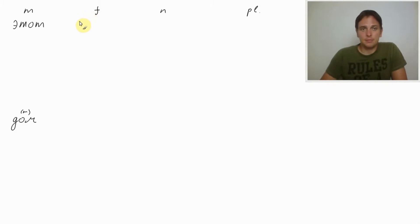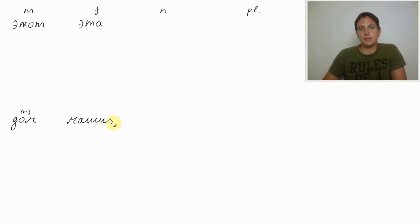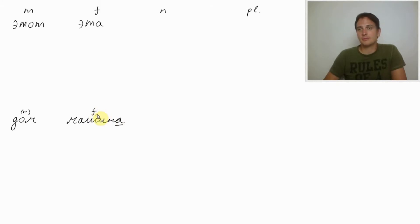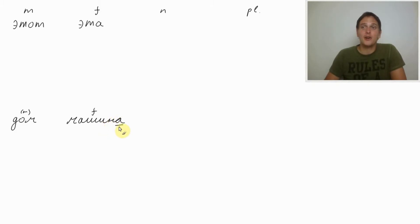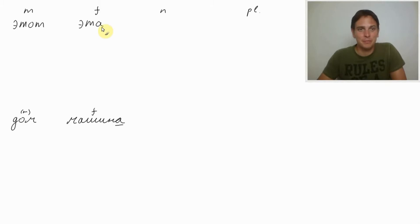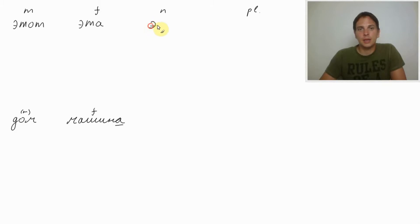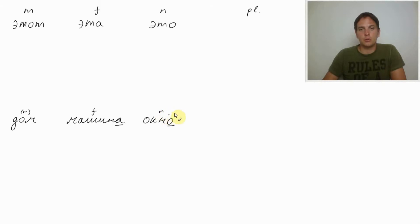For feminine: эта (eta). Эта машина — this car. Машина ends in -а and can only be feminine, except for exceptions — you remember, папа (father) is masculine and ends in -а. So машина ends in -а, it's feminine: эта машина. For neutral: это (eto). Это окно — this window. Окно ends in -о, it's neutral. We learned this quite a few times.